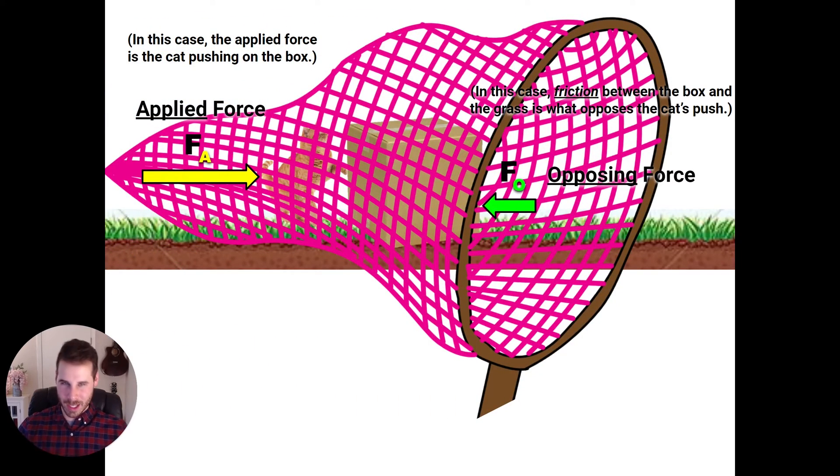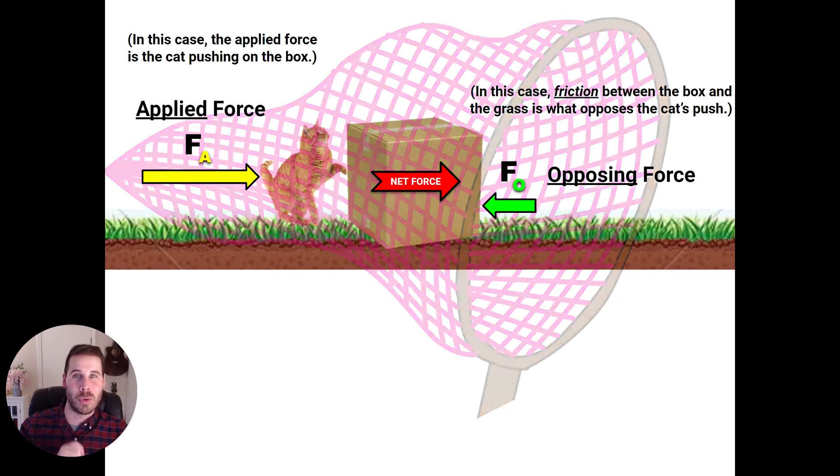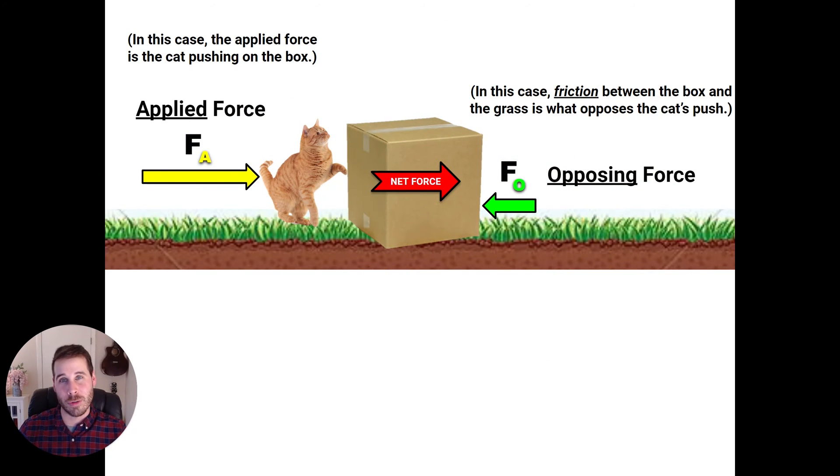So these two forces are going to fight and then the winner gets to determine where the box is going to go. So to talk about these two forces fighting, which is not a term we typically use to describe forces, we talk about what would happen if you put all these forces together in a net and you allowed the net to move in whatever direction the winner determined. Well, the winner in this case is going to be the cat because the cat is stronger than friction. And so the net force would be to the right because that's where the stronger force is pushing. So that's kind of how you can think about the term net force. It's if we put all the forces together in a net, where would the net go?